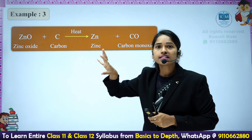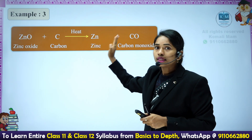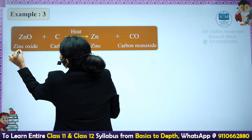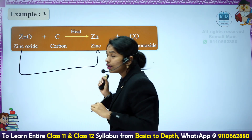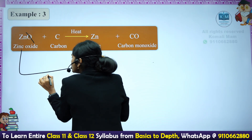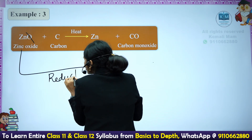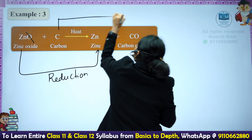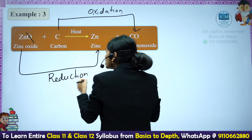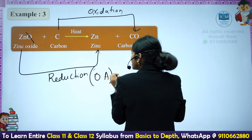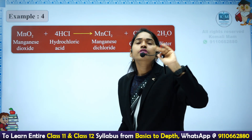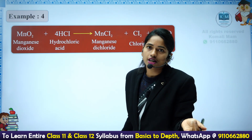Can you try? ZnO plus C — you are heating zinc oxide with coke. Then we are getting zinc metal and carbon monoxide gas is coming out. Identify what is this reaction. ZnO — zinc is losing oxygen, so removal of oxygen is reduction. Here, carbon is gaining oxygen, so addition of oxygen is oxidation. Which is the reducing agent? The one undergoing oxidation — C is the reducing agent. The one undergoing reduction — ZnO — is the oxidizing agent.